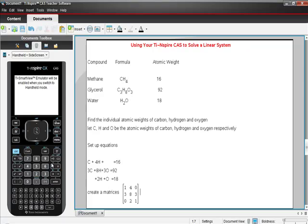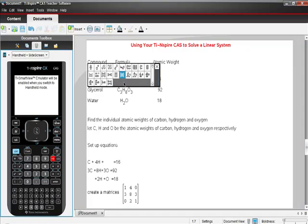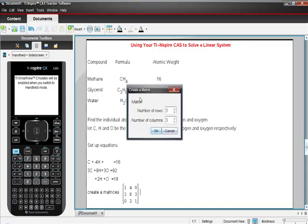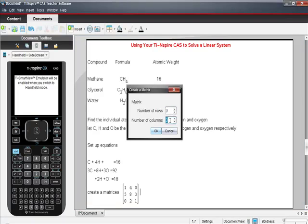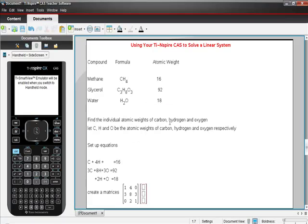And then the other matrix is going to be this 3 by 1 matrix here. So I'm going to make it a 3 by 1 matrix. And that is going to be 16, 92, 18. So on the left-hand side of the equal sign, that's one matrix here. On the right-hand side, it's going to be right here. And I want you to remember that it goes carbon in the first row, hydrogen, then oxygen.